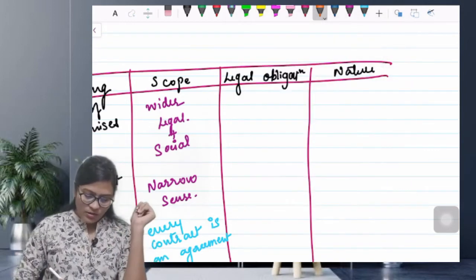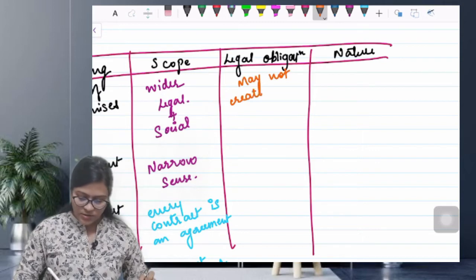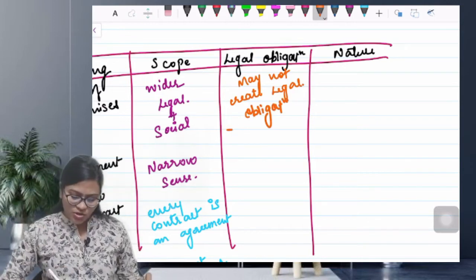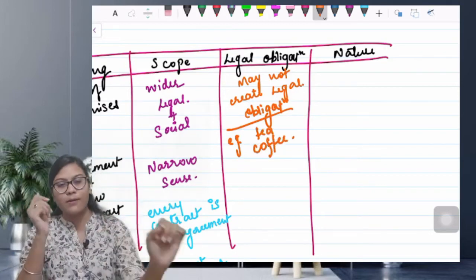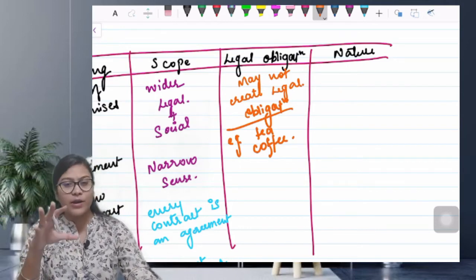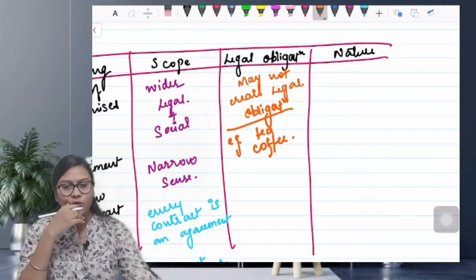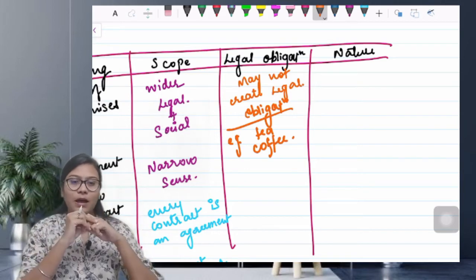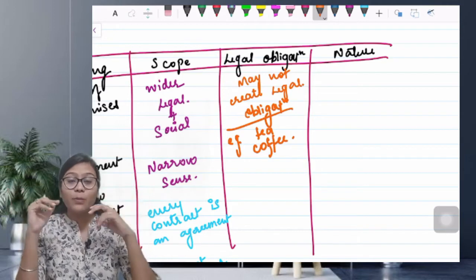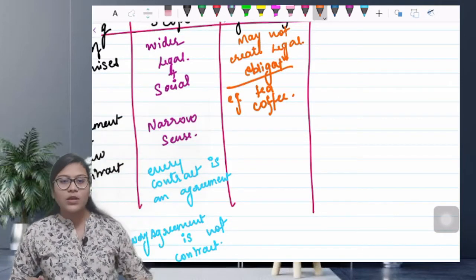Legal obligation — agreement के लिए यह बोल सकते हैं: it may not create legal obligation। Example — tea, coffee, dinner: suppose आपने किसी को बोला 'dinner के लिए चलोगे?' सामने वाले ने 'हाँ' बोला — लेकिन काम आ गया और वो नहीं जा पाए। तो क्या आप court में जाकर बोल सकते हो कि 'ये मेरे साथ dinner के लिए नहीं आए'? No — क्योंकि इस पर legal enforceability नहीं है। This may not create legal obligation।